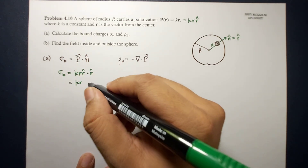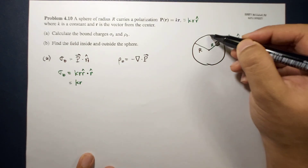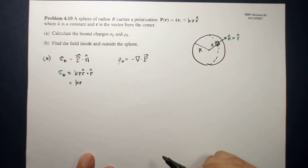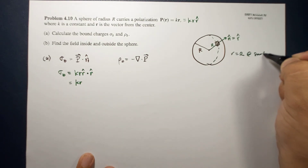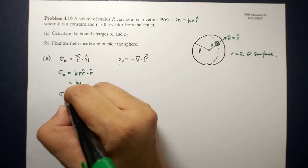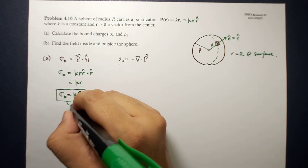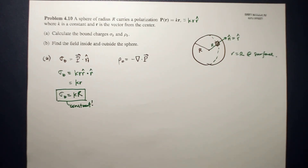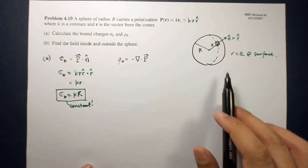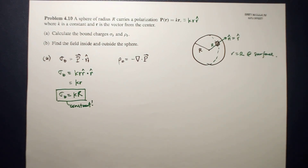Because these charges are accumulated at the surface of the sphere, R equals the radius R. So therefore σ_B = K·R, which is a constant. The accumulated charges due to polarization on the surface of the sphere equal K times R, and that is a constant. Now, what about the bound charges within the volume?